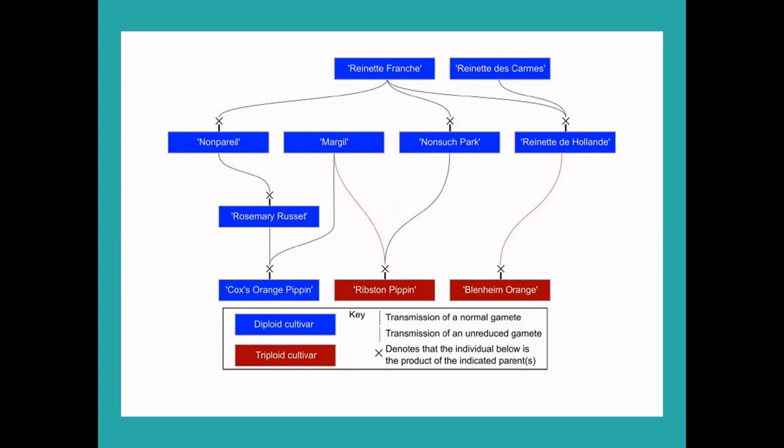The actual pedigree of Cox Orange Pippin is Rosemary Russet, a descendant of Nonpareil and Margil, one of the ancestors of Ribston Pippin.